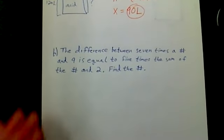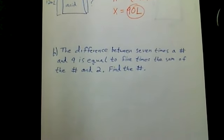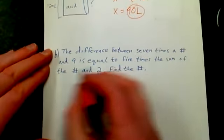The next problem - this one's kind of fun. The difference between seven times a number and nine is equal to five times the sum of the number and two. Find the number. Well, the number - what can we call this number? That's the thing we want to know.